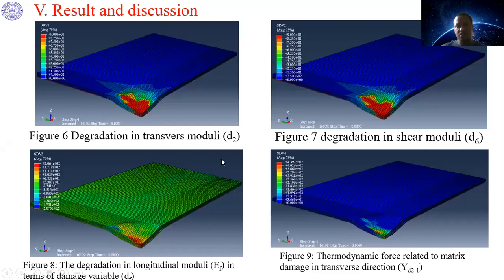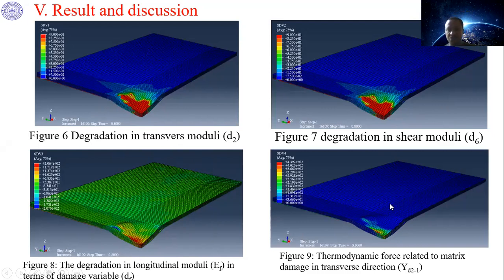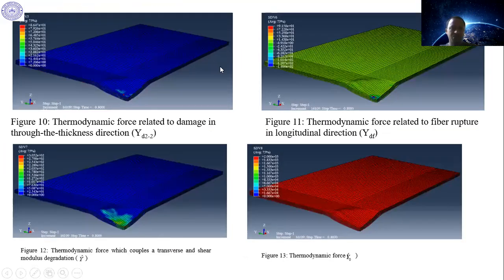The results obtained show the degradation of the transverse modulus due to matrix damage, the degradation due to shear effects, fiber damage or degradation of the longitudinal modulus in the fiber direction, and the thermodynamic force D2 with D1 represented in the model.